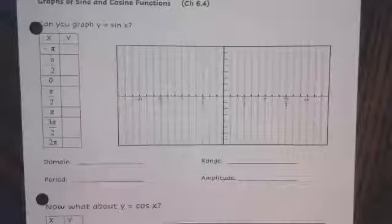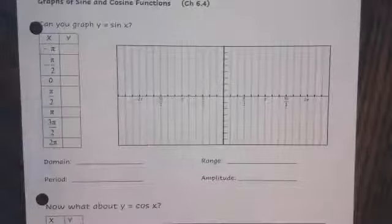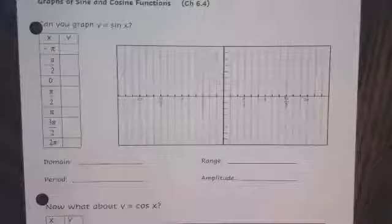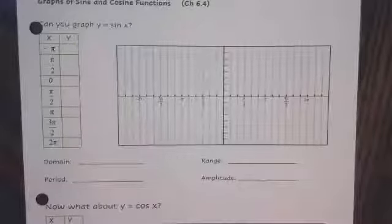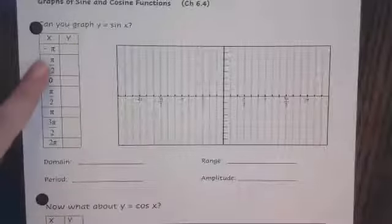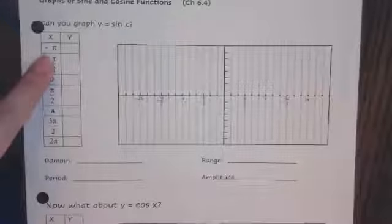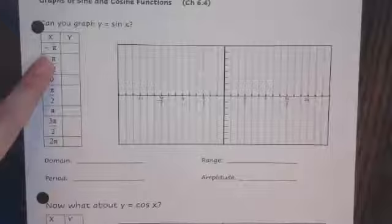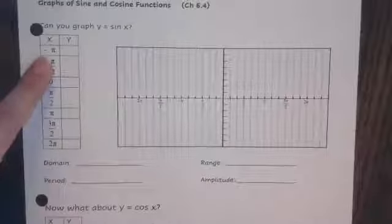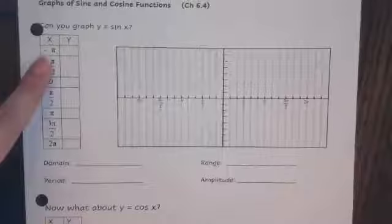We'll start by filling out this table. I've got my table of values right here on the side, and we are going to fill that out. As a reminder, sine is the y value on the unit circle. So if we think about negative pi, and when we go to the negative side, we are going clockwise — that is going to end up at the same location as pi, so our y value there is zero.